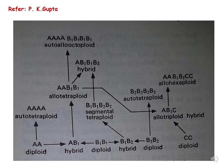You will understand all these terms with the help of this flowchart and you can refer PK Gupta for this. Here you can see a diploid plant which has two sets — its genome has two copies of A, representing homologous pairs of paternal and maternal chromosomes. Suppose chromosome duplication takes place by natural means or through chemical treatment — the diploid plant having two sets of chromosomes will be duplicated to four sets and it becomes a tetraploid.